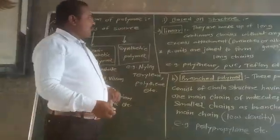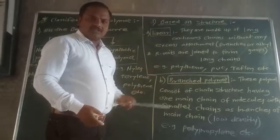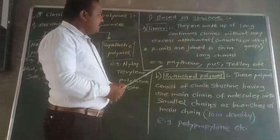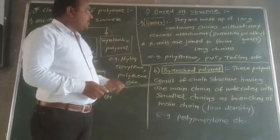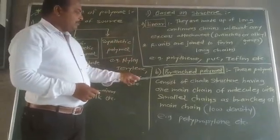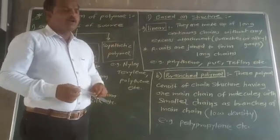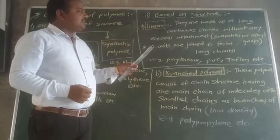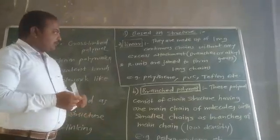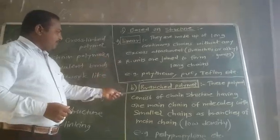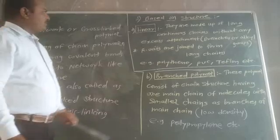Now we turn to the next point: classification based on structure. On the basis of structure, there are three types of polymers — linear polymer, branched polymer, and cross-linked or networked polymer. We will see them one by one and step by step.